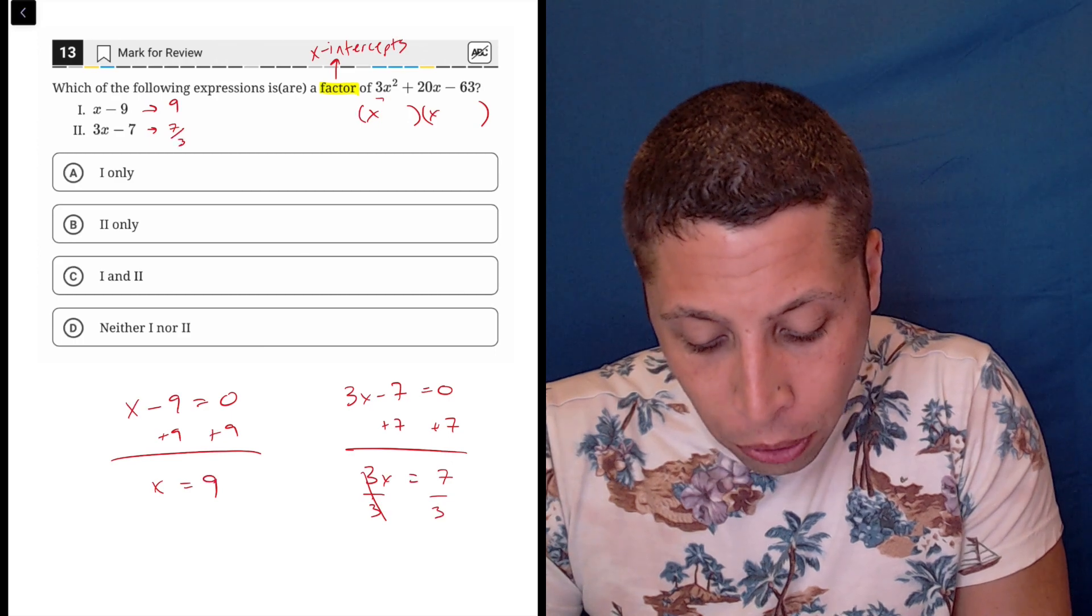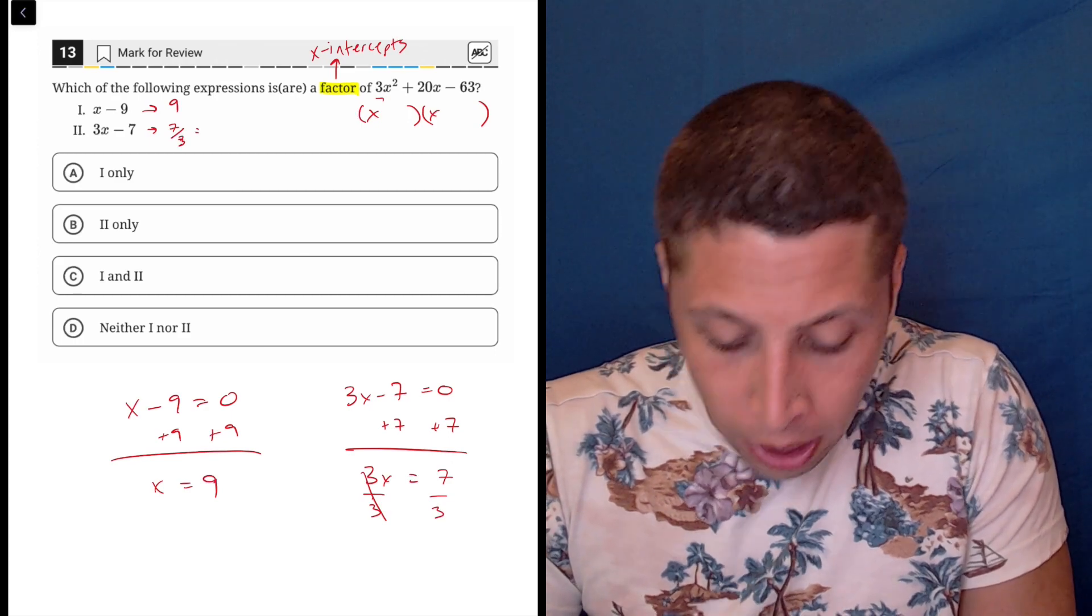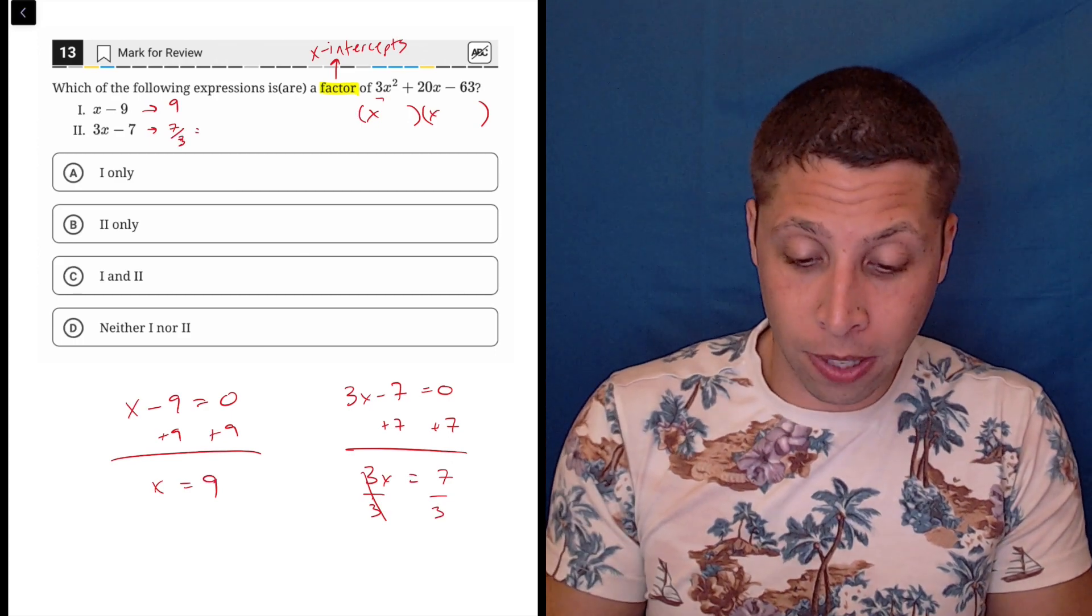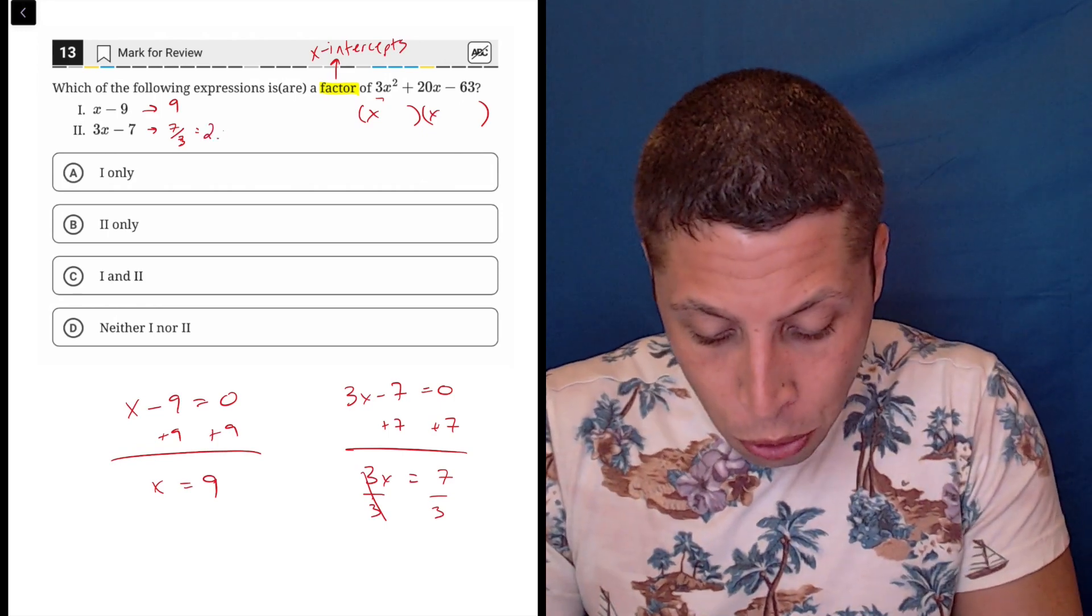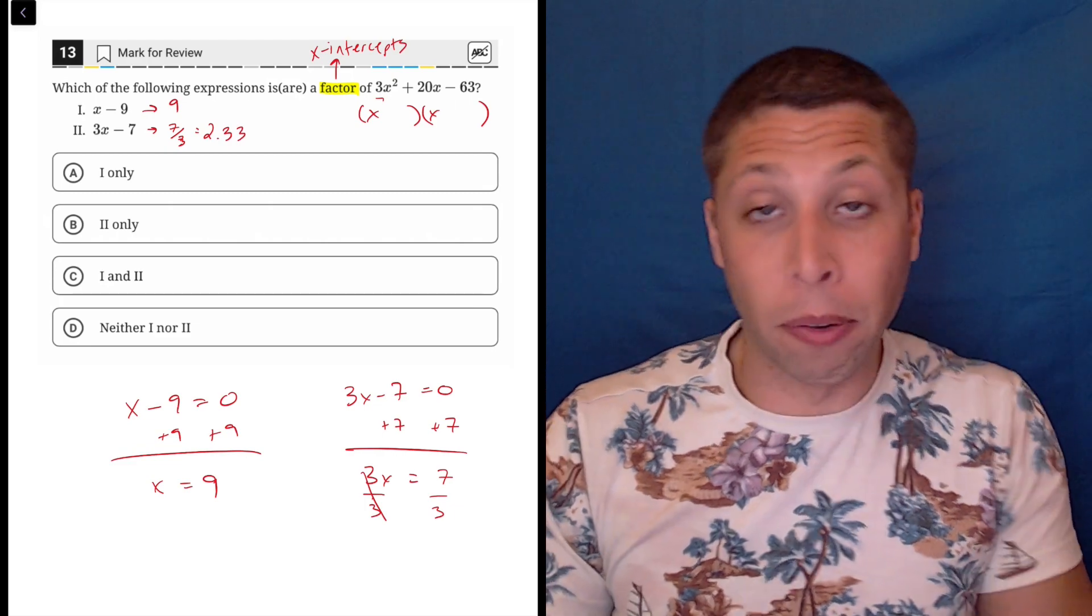So what is 7 thirds? If you're unsure, you can put that in your calculator, kind of your normal calculator. 7 divided by 3 is 2.3, or 2.3 repeating.